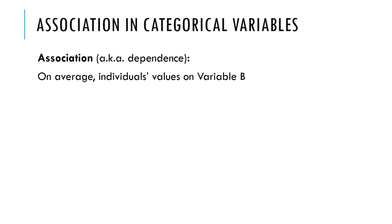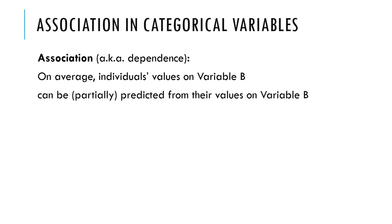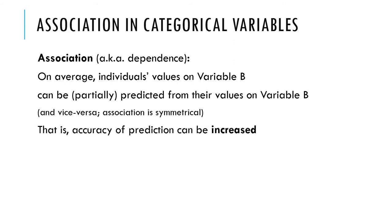Association is also called dependence. One useful way to think about this: association or dependence statistically means that, on average, the values of individuals on one variable can be predicted — or your accuracy of prediction can be increased — by considering values on the other variable. If you know something about one variable, that helps you know something about the other. It's symmetrical: if you can predict B from A, you can predict A from B. It's not perfect prediction, but it increases your odds of accuracy.